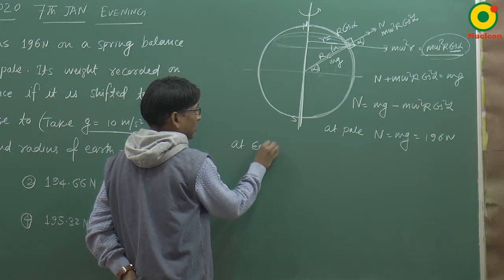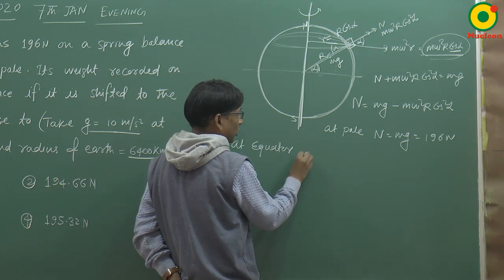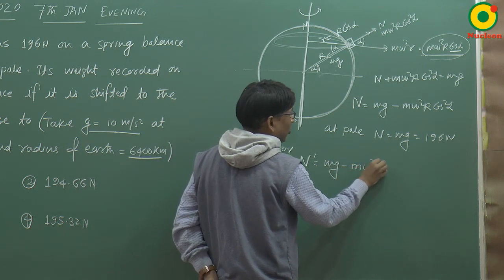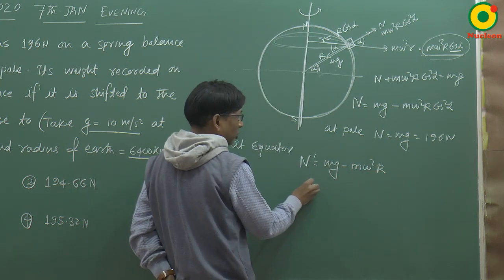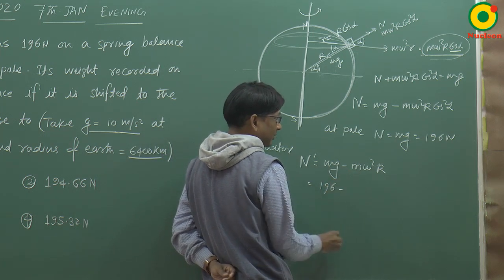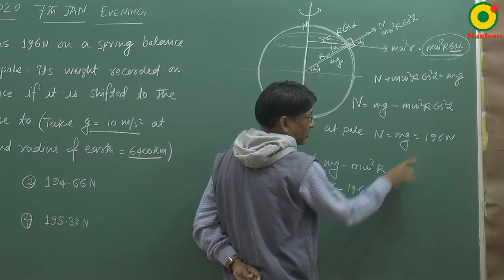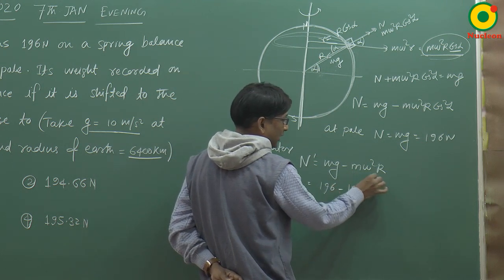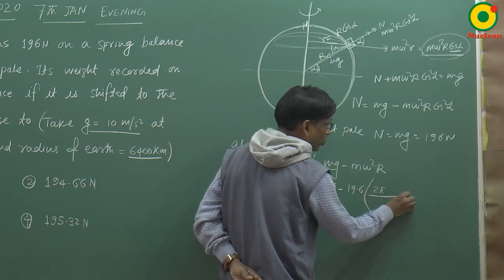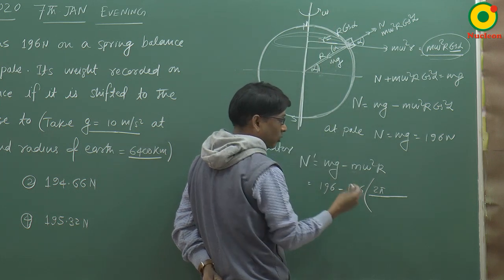At equator पर α = 0° रखना पड़ेगा, तो N' = mg − mω²R। mg = 196 N था, और m = 196/10 = 19.6 kg। ω = 2π/T, जहाँ T Earth के rotation का time period = 24 hours।